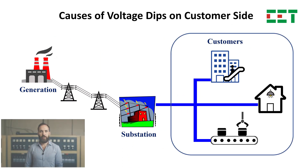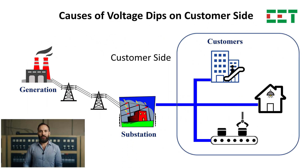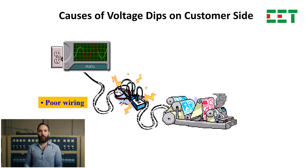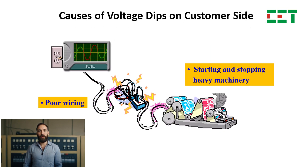On the customer side, dips may be caused by poor wiring, short circuits, or starting heavy machinery.